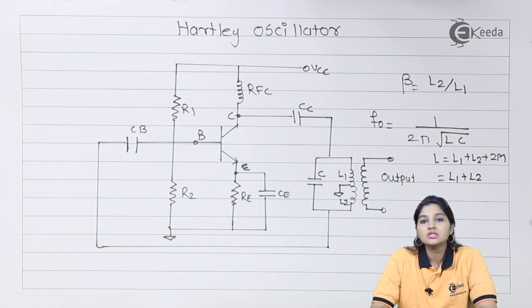The LC circuits are further classified into different types: tune-collector oscillator, tune-base oscillator, Hartley oscillator, colpitts oscillator and clapp oscillator. Out of these oscillators, tune-collector, tune-base and Hartley oscillator use inductive coupling whereas clapp and colpitts oscillator use capacitive coupling.